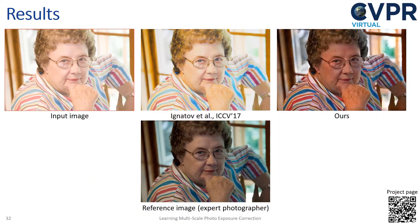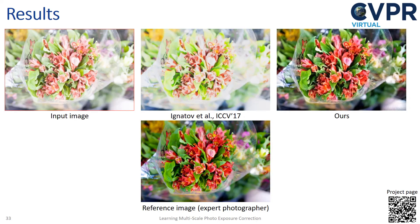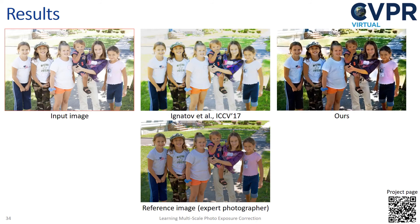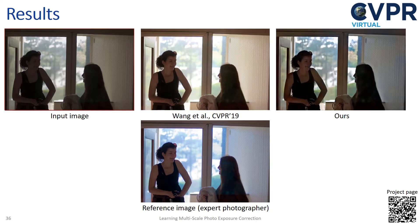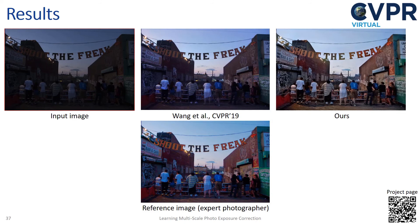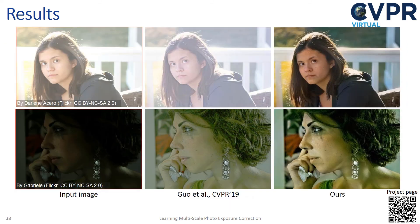Here we show qualitative comparisons with prior work on overexposed images. Here we show results on images that have been underexposed. Here we show results on images outside our dataset. We have no ground truth for these images. However, we can see our method produces visually pleasing results compared with the recent method targeting image enhancement.